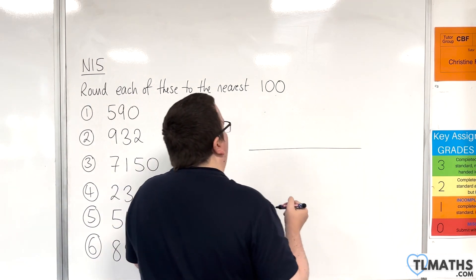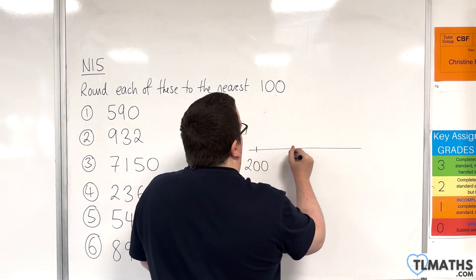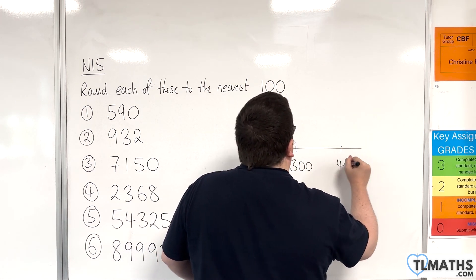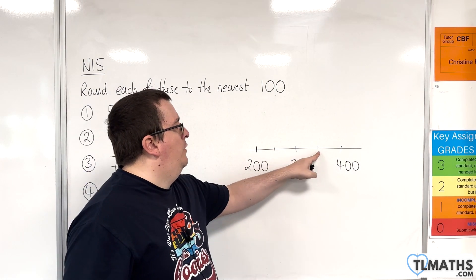Again, thinking about your number line, you're looking at let's say 200, 300, 400. And here are your points midway, 250, 350.